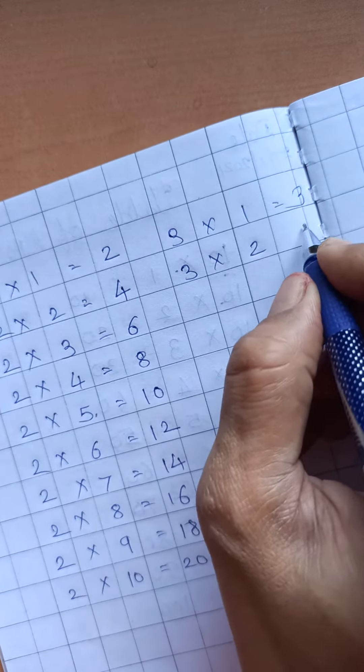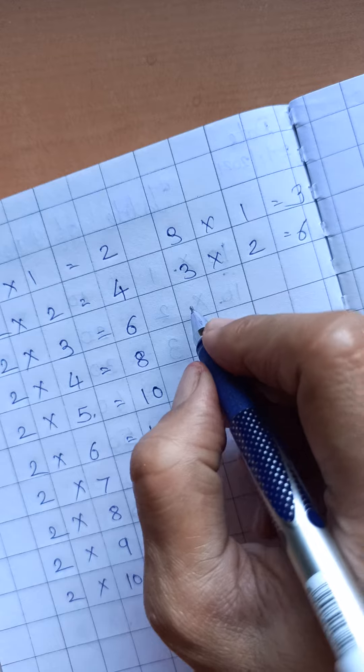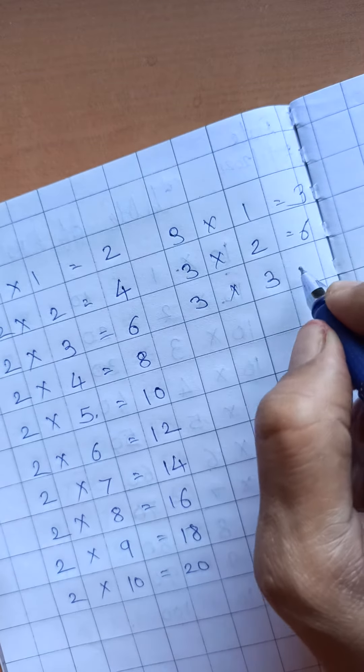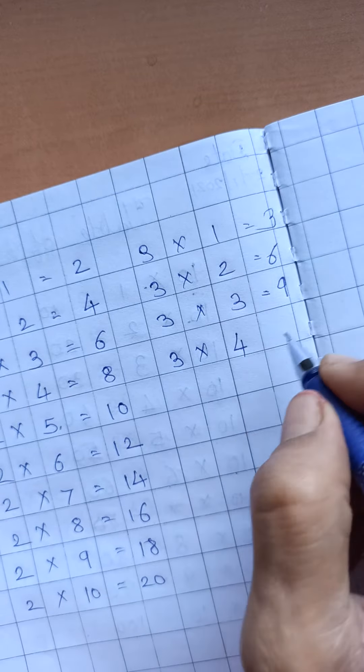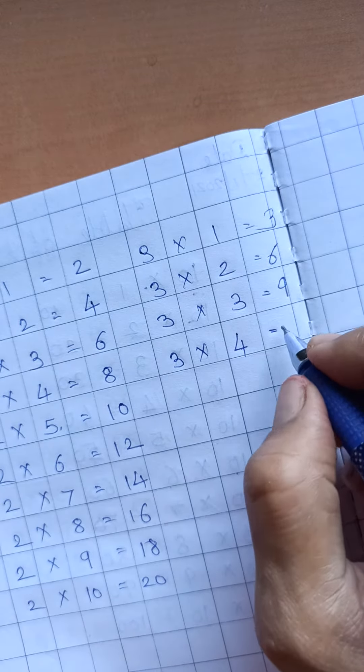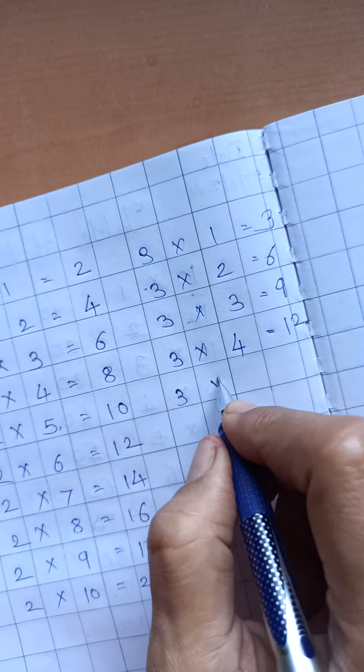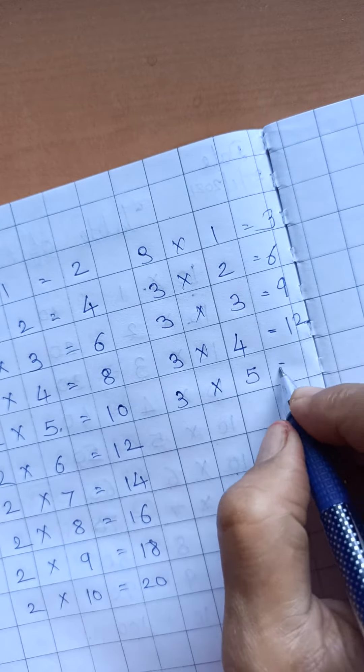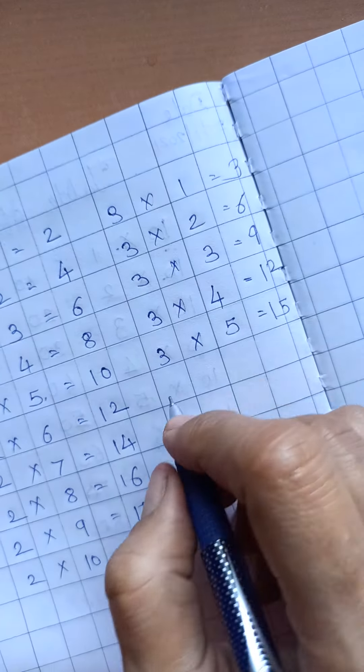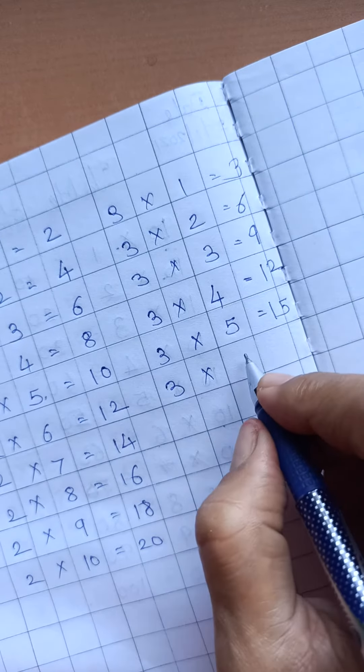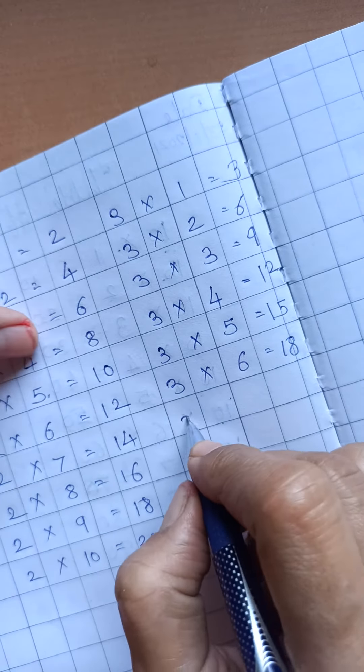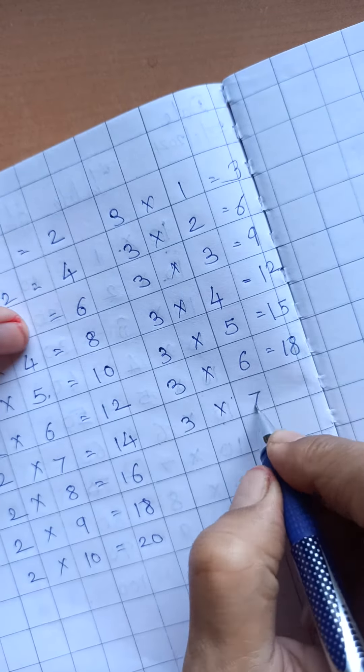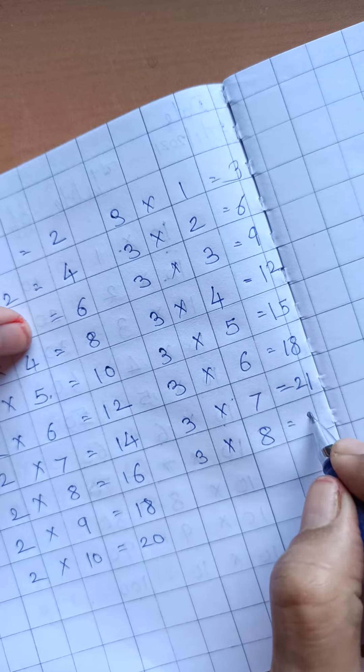3 2s are 6. 3 3s are 9. 3 4s are 12. 3 5s are 15. 3 6s are 18. 3 7s are 21. 3 8s are 24.